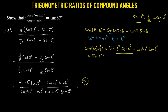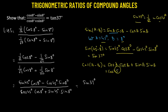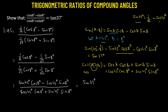Now coming to the denominator, we apply the formula for cosine of (a minus b), which equals cosine a times cosine b plus sine a times sine b. Using a equals 45 degrees and b equals 8 degrees, we get cosine 45 degrees times cosine 8 degrees plus sine 45 degrees times sine 8 degrees — exactly the denominator expression. So the denominator equals cosine of (45 minus 8) degrees, which is cosine 37 degrees.